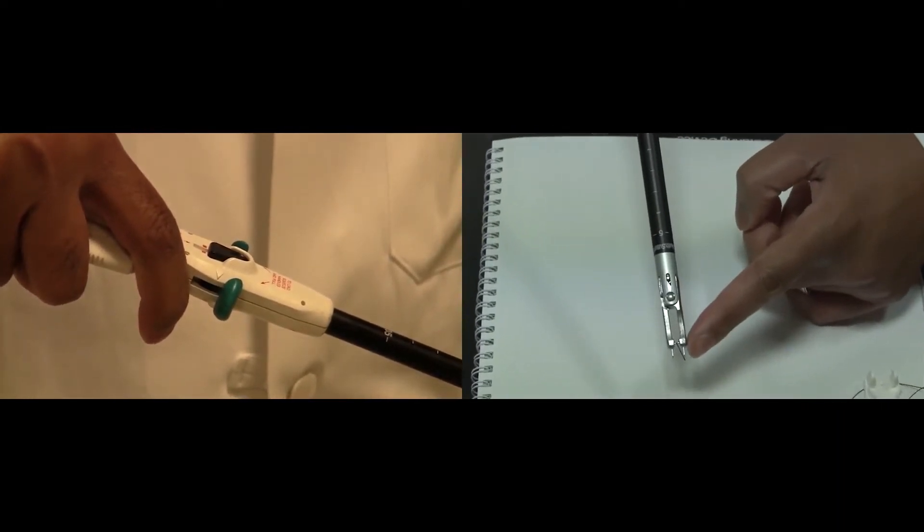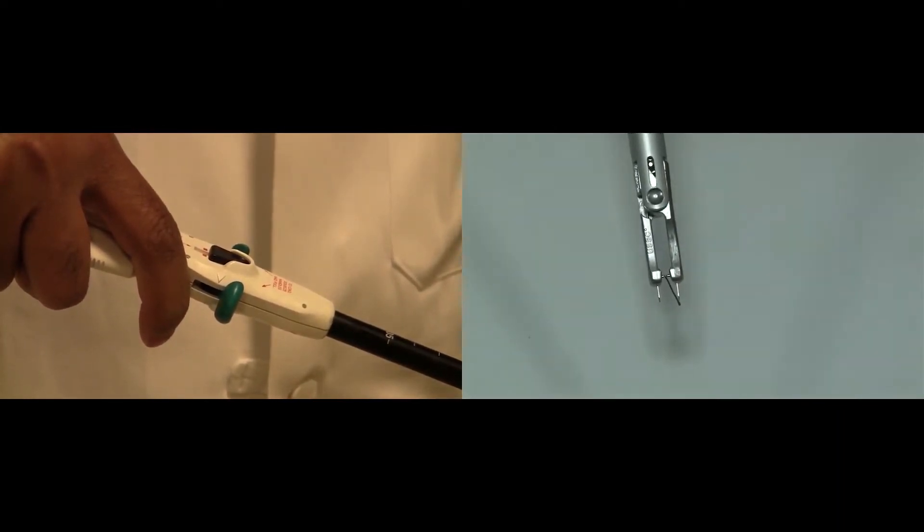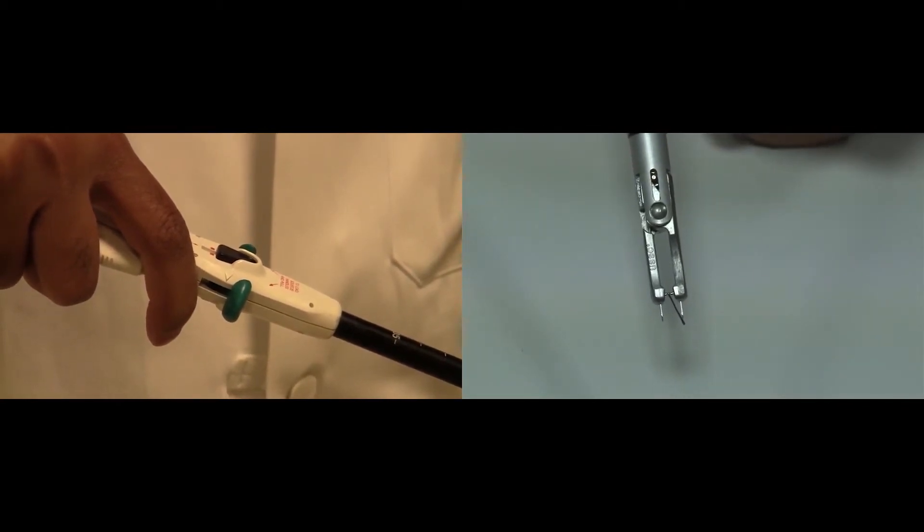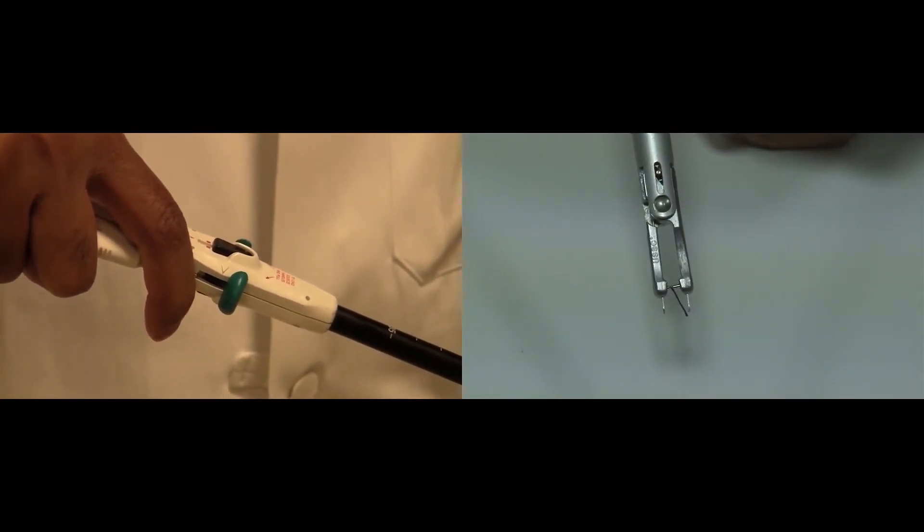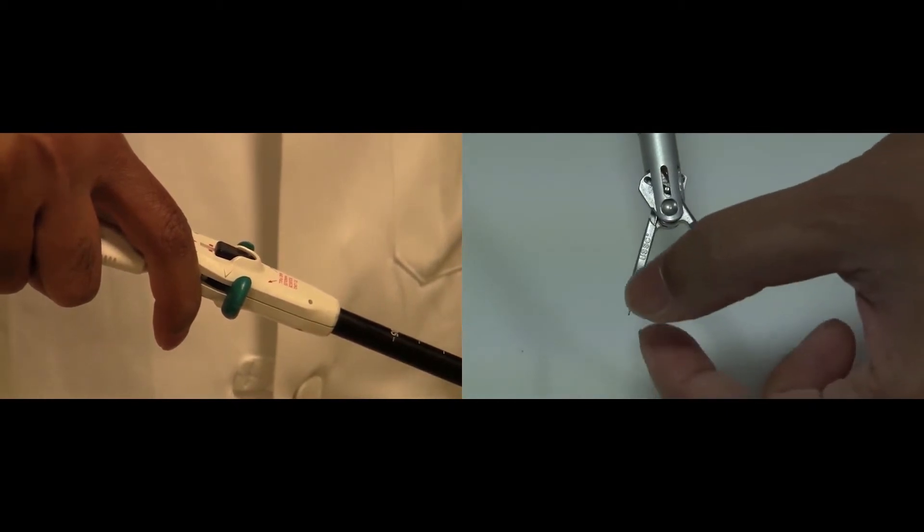Once these two prongs are sticking out of the device, the needle is free. Simply open the device up and remove the needle from the suturing device.